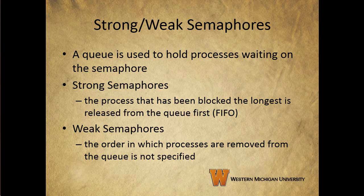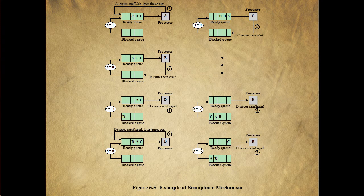We use a queue to hold processes that are waiting on the semaphore. The difference between strong and weak semaphores has to do with how we determine which blocked process to remove from the queue first. With a strong semaphore, we use a simple first-in, first-out approach — the process blocked the longest is released first. With weak semaphores, we don't specify an order in which processes are removed from the queue. Let's take a look at an example of the operation of a strong semaphore.